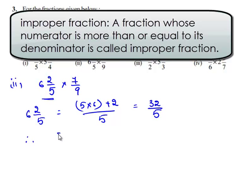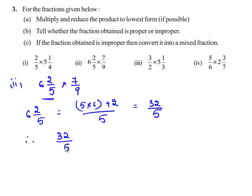Therefore we have 32/5 multiplied by 7/9. The product of two fractions is given by the product of their numerators divided by the product of their denominators. So this is (32 times 7) divided by (5 times 9), which equals 224/45.